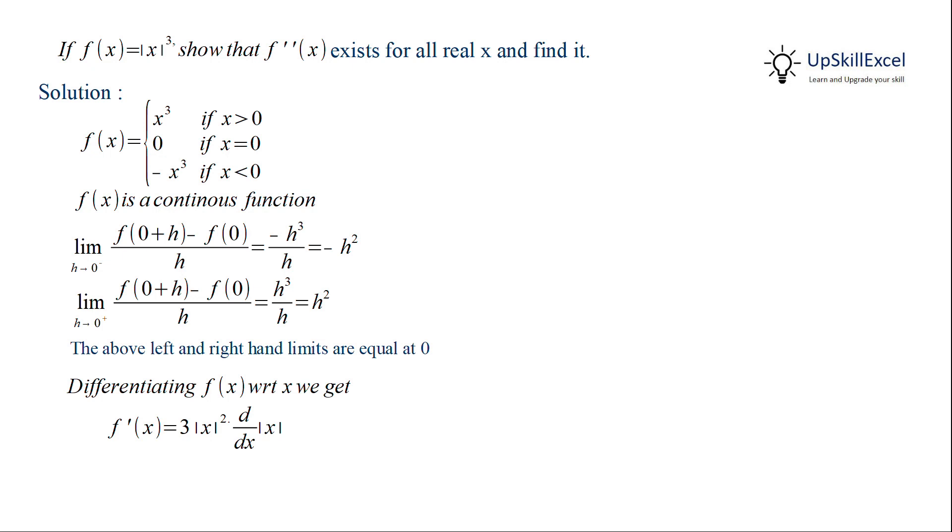So |x|³ becomes 3|x|² and then from chain rule, we get derivative of |x|, which we know equals x/|x|. f'(x) gets simplified to 3|x| times x.